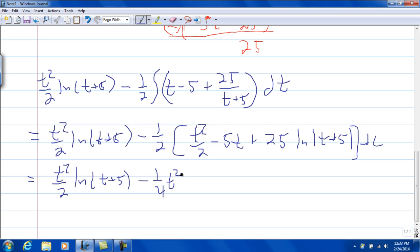So then it's minus 1 half times minus 5t, so plus 5 halves t, minus 1 half times 25, natural log of t plus 5, that's going to be minus 1 half 25, natural log of t plus 5. You're probably thinking, why don't you just call it 25 halves, and plus c, because now this natural log of t plus 5 occurs twice, and we can factor that out.